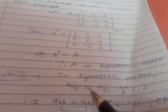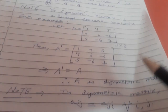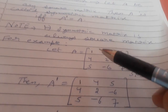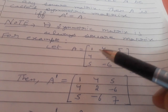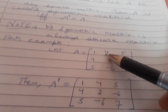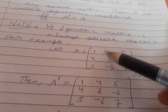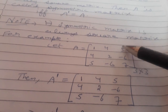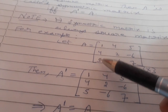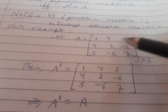In this matrix, Aij is always equal to Aji for every i, j. This means A12 should be equal to A21, and A13 should be equal to A31.